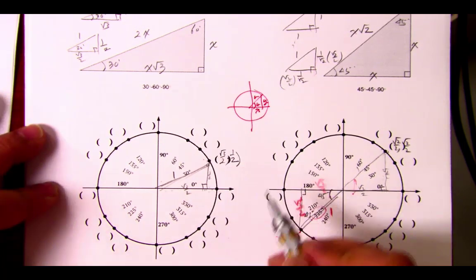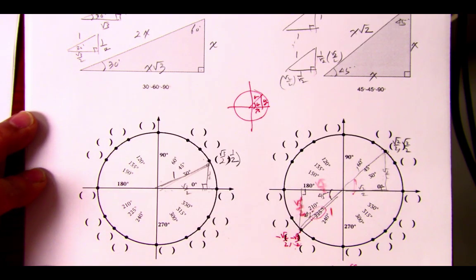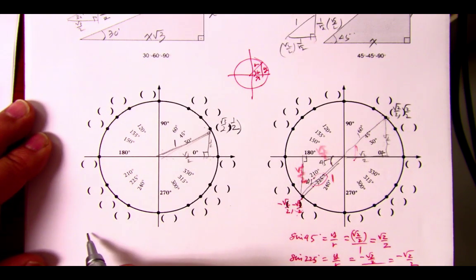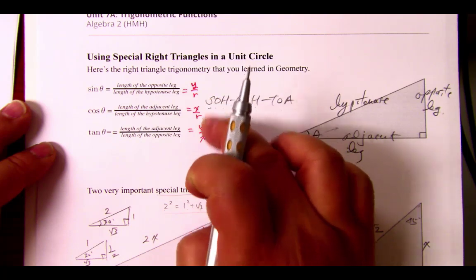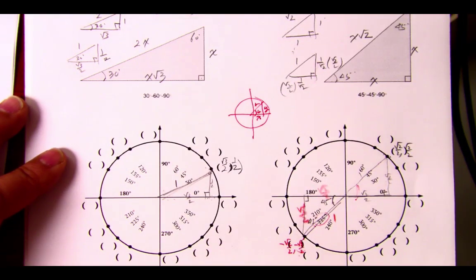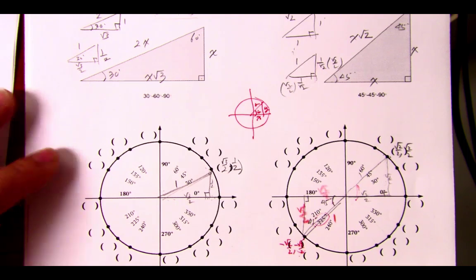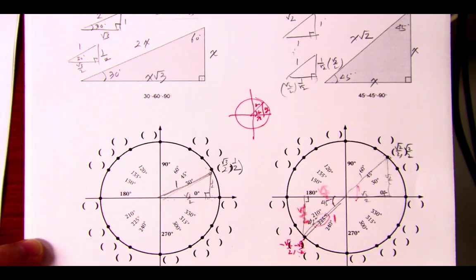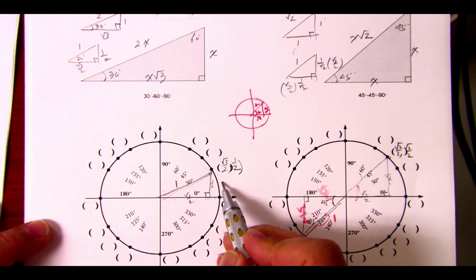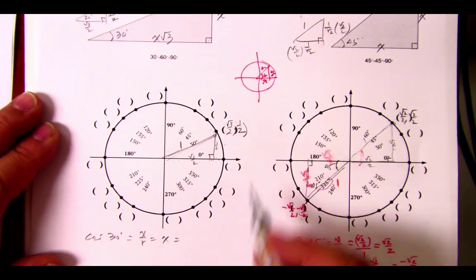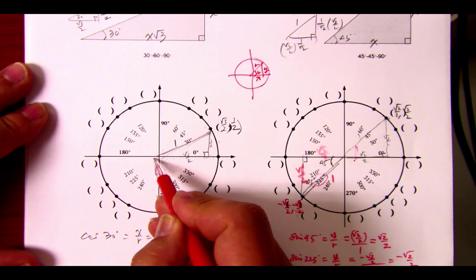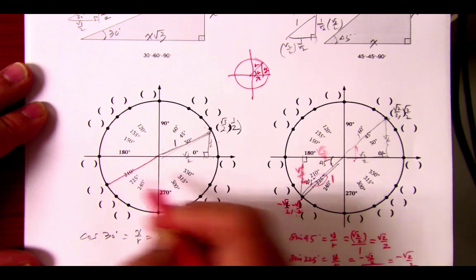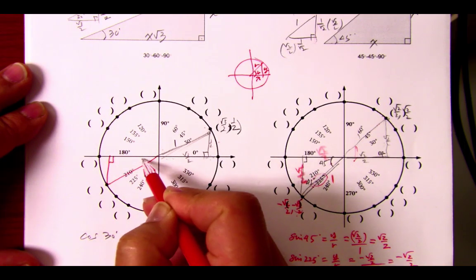From here, we could then say the following. Let's try cosine of 30 degrees. If you go back to the definition, it's x over r. We know that because r is 1 in this case, we don't really need to write that anymore, so it's just x. What is my x coordinate over here? Root 3 over 2. That was it.